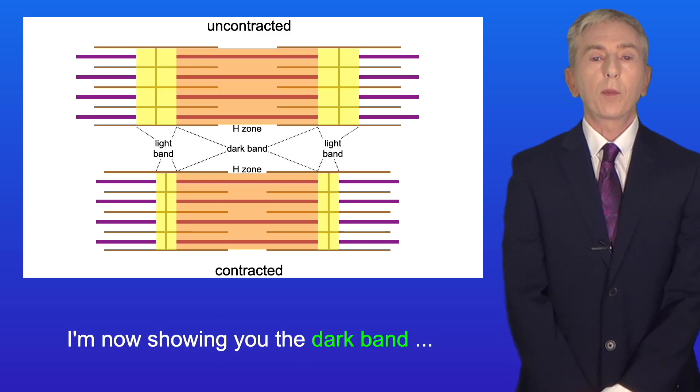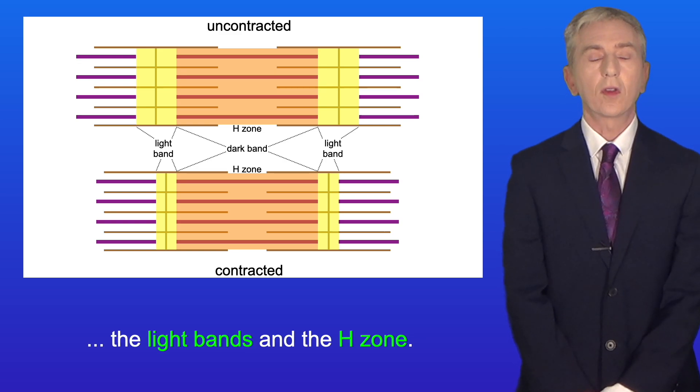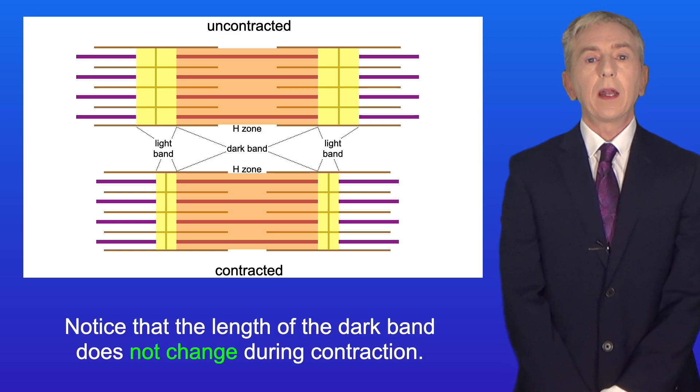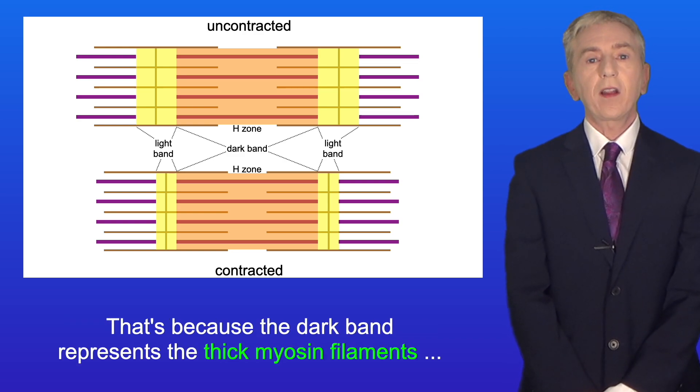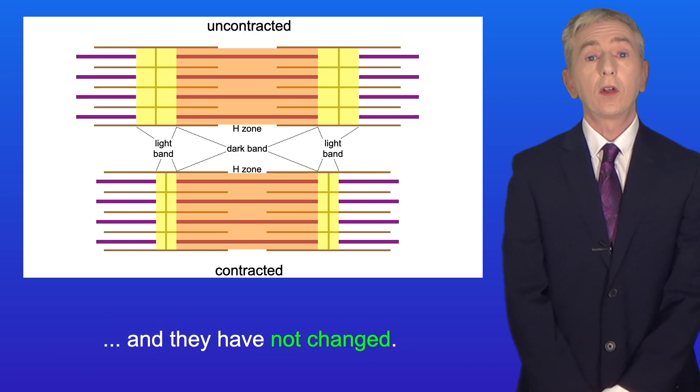I'm now showing you the dark band, the light bands and the H zone. Notice that the length of the dark band does not change during contraction. That's because the dark band represents the thick myosin filaments and they have not changed.